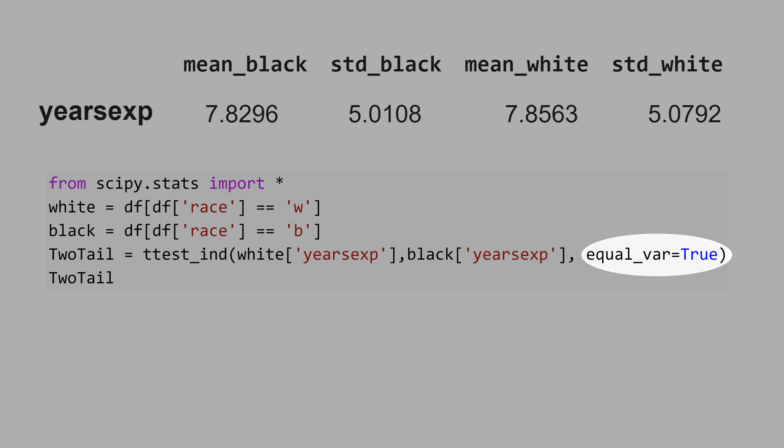Variance is just the square of the standard deviation, and the standard deviation of black is 5, and the standard deviation of white is 5 as well. They are equal.